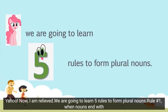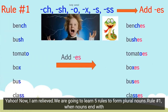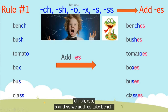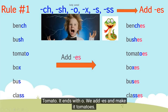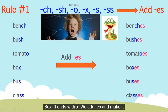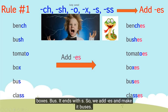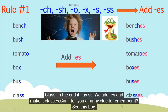We are going to learn five rules to form plural nouns. Rule number one: when nouns end with CH, SH, O, X, S, and SS, we add ES. Like bench — it ends with CH, so we add ES and make it benches. Bush ends with SH, so we add ES and make it bushes. Tomato ends with O, so we add ES and make it tomatoes. Box ends with X, we add ES and make it boxes. Bus ends with S, so we add ES and make it buses. Class ends with SS, we add ES and make it classes.